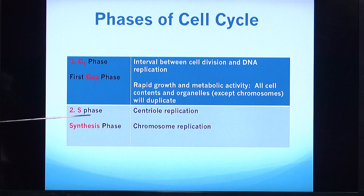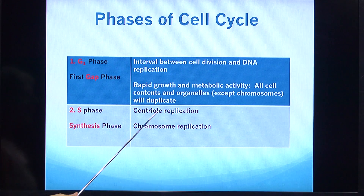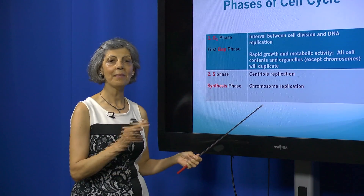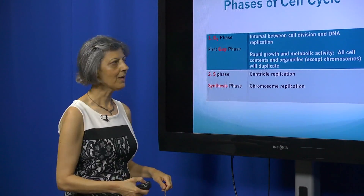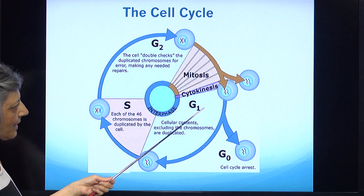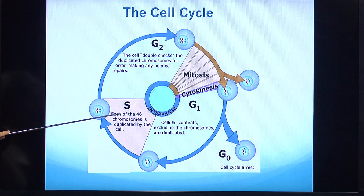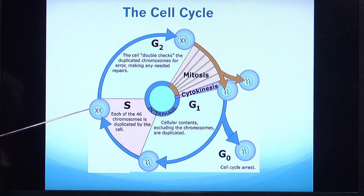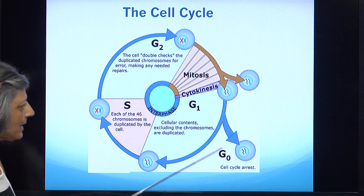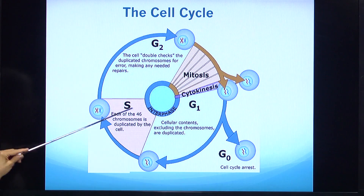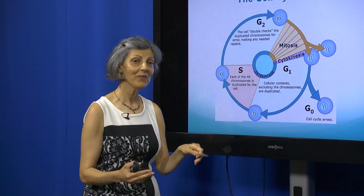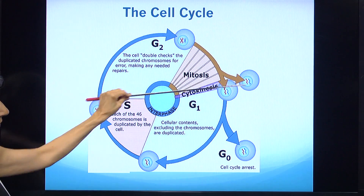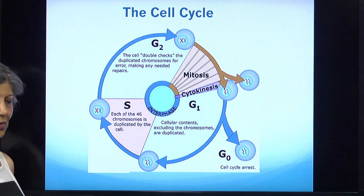When it comes to the synthesis phase, or S phase, this is where the centrioles will replicate — making another copy. The chromosomes will also replicate, making another copy. Each chromosome makes another copy of itself. The original 46 chromosomes each replicate, so that when we divide at the end, we have 46 chromosomes for each new cell.